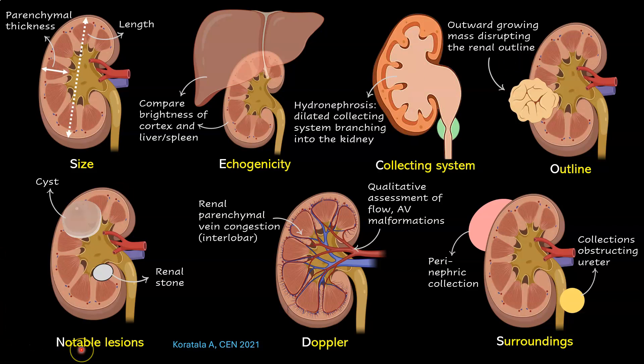N stands for notable lesions such as cysts and stones. D stands for Doppler — by turning on color Doppler, you can assess flow qualitatively and see if there are any major arteriovenous malformations. When doing advanced focus, you can look at the renal parenchymal vessels and assess flow in those vessels — for example, when assessing venous congestion in a patient with cardiorenal syndrome.